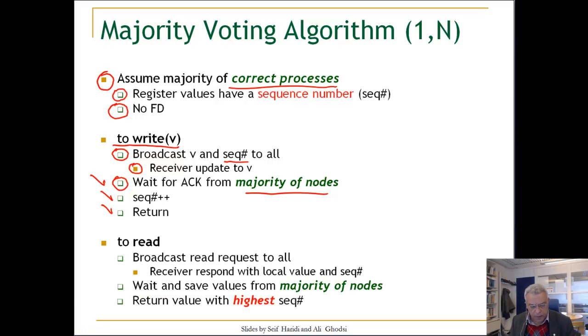Let's now look at a read operation. A node performing a read operation will broadcast a read request to all nodes. When a node gets the read request, it responds with the local value plus the sequence number. The node that is requesting a read will wait and save the values from a majority of nodes. After it got the value from a majority of nodes, it knows that at least one of these values should be the most updated value. It will return the value with the highest sequence number.